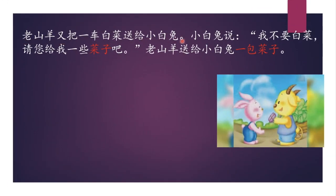老山羊又把一車白菜送給小白兔 — 把 sentence again. So the old goat gave a cart of cabbage to the little white rabbit. 小白兔說,我不要白菜。 The little white rabbit said, I don't want cabbage.